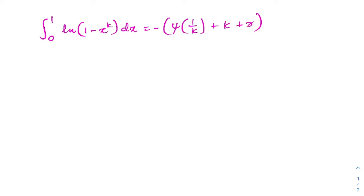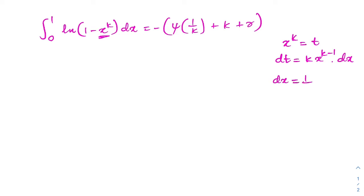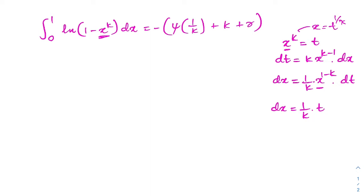Let us begin with the U substitution. We have x^k, so I am going to take x^k equal to t, then differentiate. So dt is equal to k times x^(k minus 1) dx. Now we can isolate dx, so dx is equal to (1/k) times x^(1 minus k) dt. We know x equals t^(1/k), so we can write dx equal to (1/k) times t^(1/k minus 1) dt.